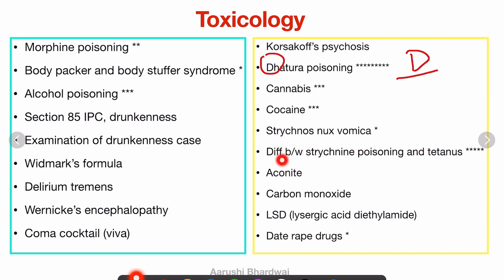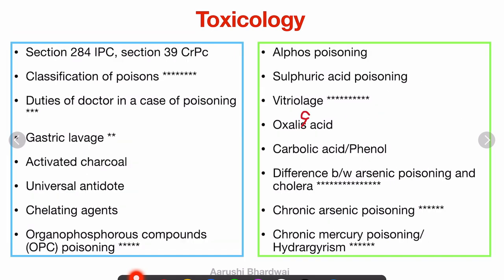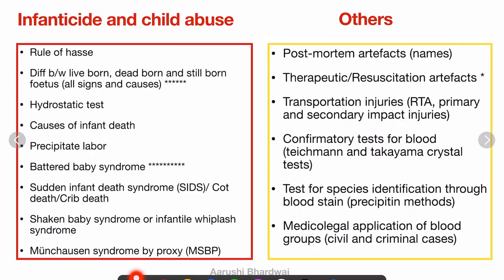Cannabis and cocaine are again very important. Strychnos nux-vomica, and the difference between strychnine poisoning and tetanus, is a very important topic. Aconite, carbon monoxide, and lysergic acid diethylamide (LSD) are some read-through topics. Date rape drugs are also important.